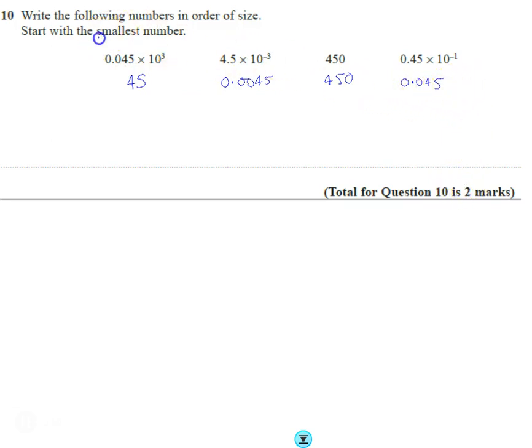So let's start with the smallest number. So the smallest number is, and I always write the original thing I gave you, 4.5 times 10 to the minus 3.